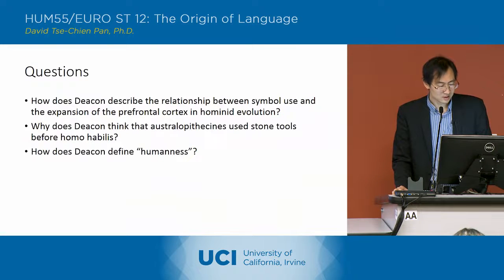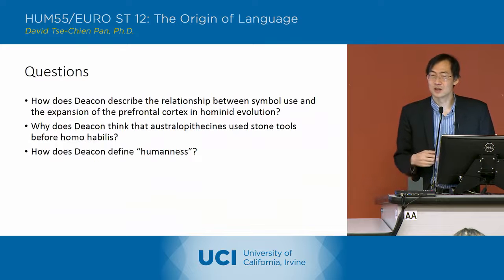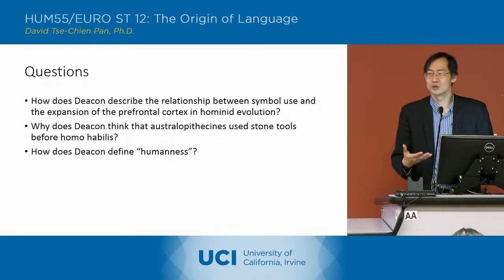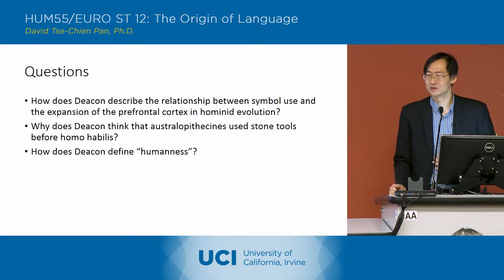How does Deakin define humanness? Humanness is defined as creatures who produce and transmit symbols — making and passing along symbols.